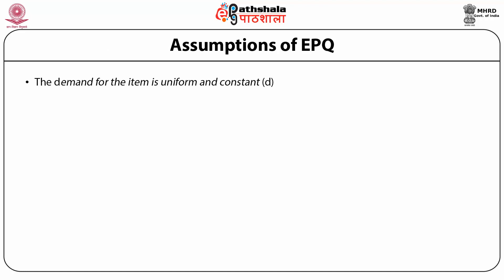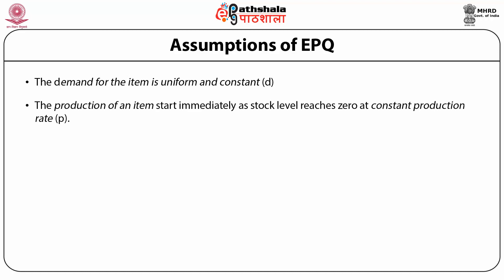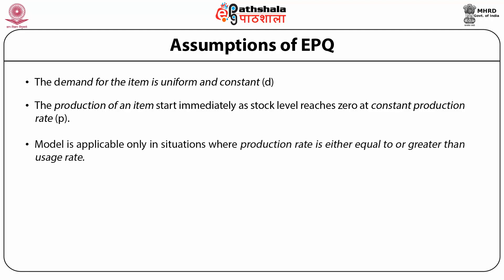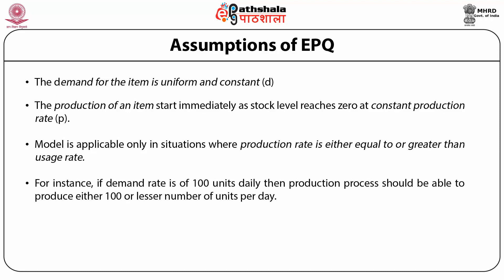Assumptions of EPQ. Number one: the demand for the item is uniform and constant. Number two: the production of an item starts immediately as stock level reaches zero, at constant production rate P. The model is applicable only where production rate P is greater than or equal to usage rate D. For instance, if demand rate is 100 units daily, then production should be able to produce 100 or more units per day.